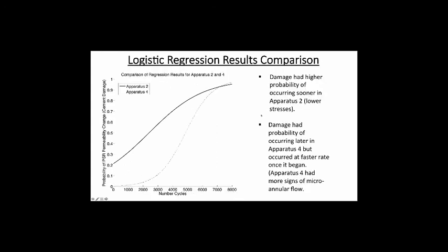Comparing the two logistic regression results: apparatus two, subjected to lower stress, had a higher probability of damage occurring sooner. Apparatus four, subjected to higher stress, had damage occurring later, but once it occurred it progressed at a faster rate. Apparatus four also showed more signs of micro annular flow than apparatus two.